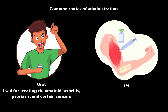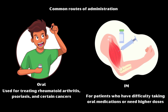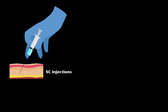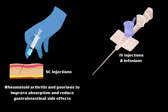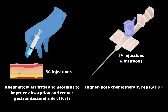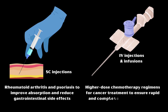Intramuscular injections are often used for patients who have difficulty taking oral medications or need higher doses. Subcutaneous injections are frequently used for conditions such as rheumatoid arthritis and psoriasis to improve absorption and reduce gastrointestinal side effects. Intravenous injections or infusions are typically used in higher-dose chemotherapy regimens for cancer treatment to ensure rapid and complete delivery of the drug.